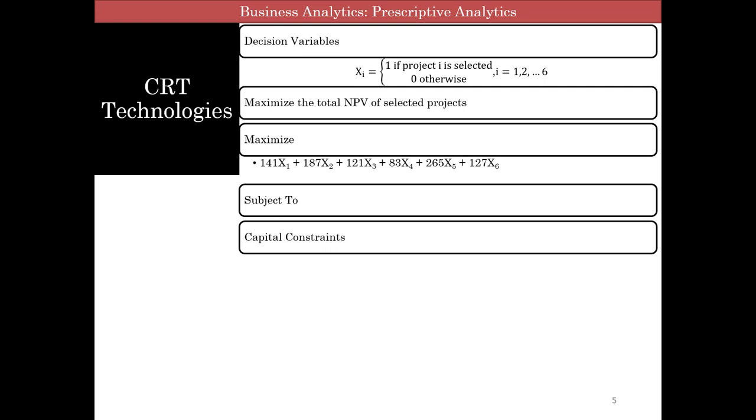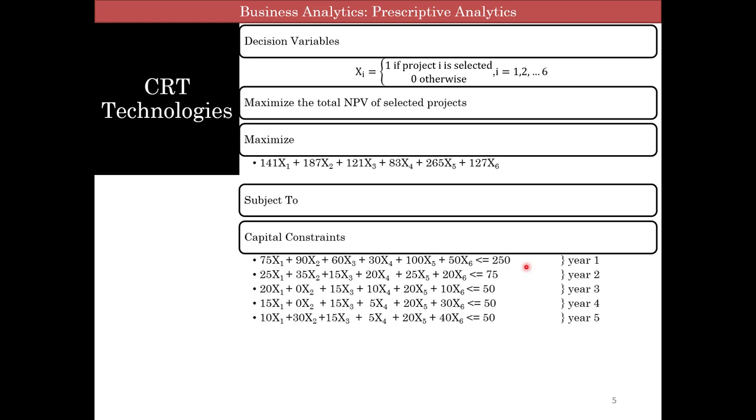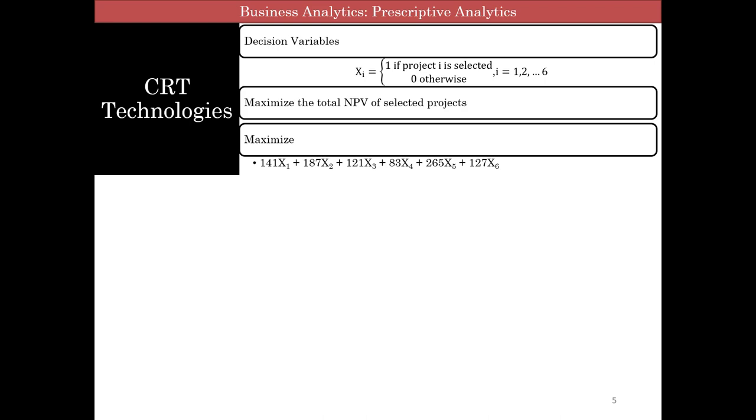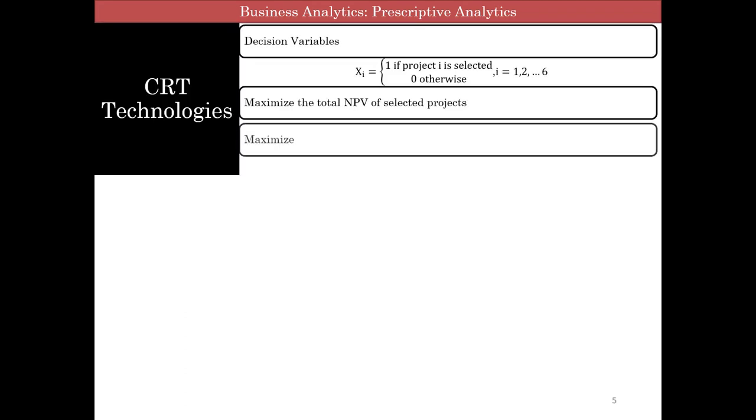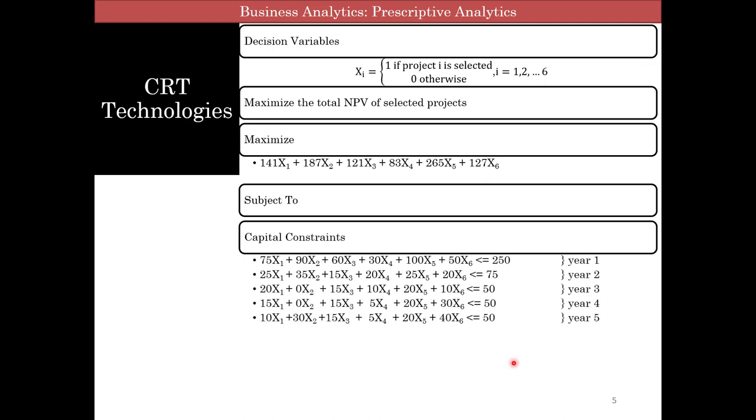So the computer will decide whether to put a one or a zero in each one of these variables. Subject to, and then you have constraints. So let's look at each year now. Year one, if you go back and look at that table, you have, for each project you have costs for year one. So you have 75x1 plus 90x2 plus 60x3, that's what you're looking at. So you're going to look at the costs, and these costs, remember you have only $250,000, so it's less than 250.